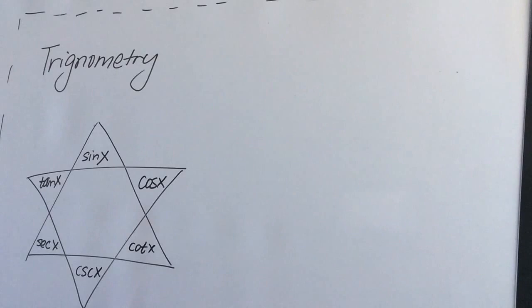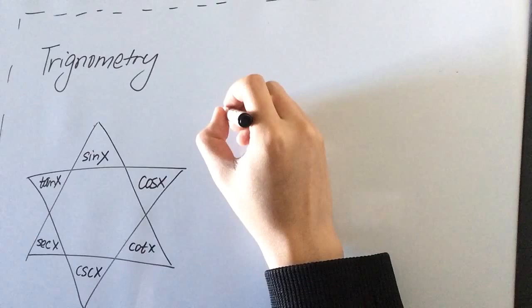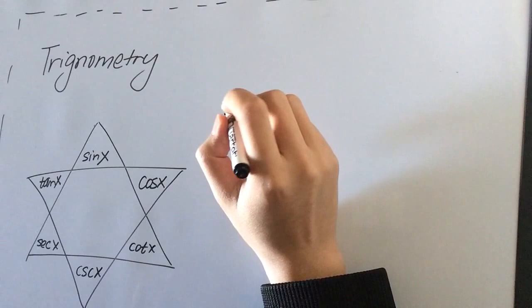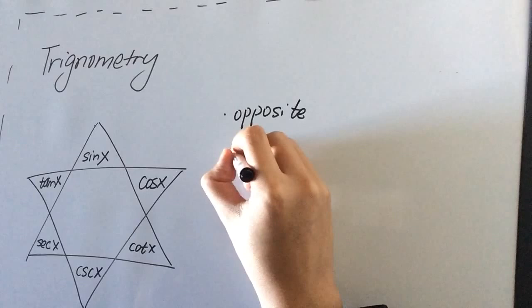So first I want to say, let's see, the opposite direction. So in opposite direction by construction, we know sine x is 1 over cosecant x. Right?